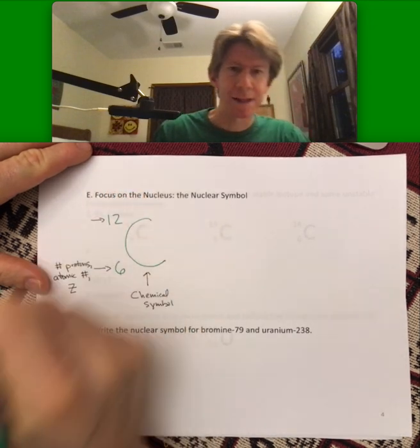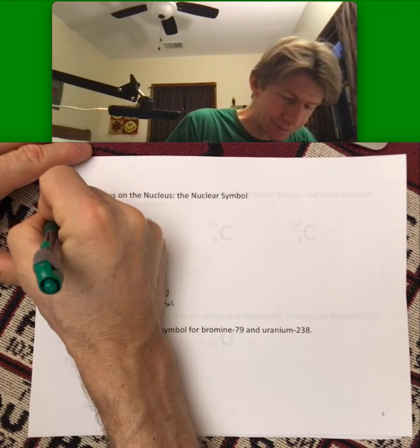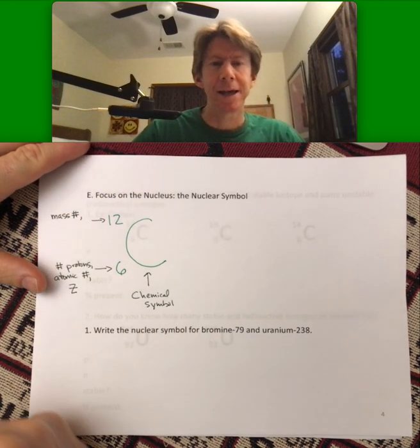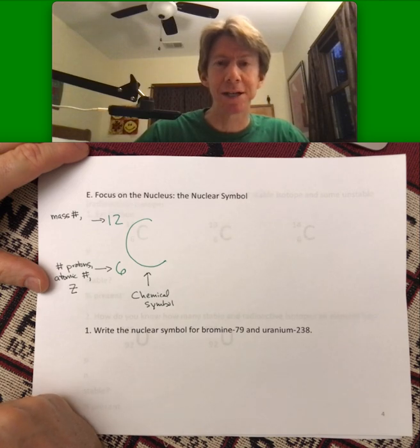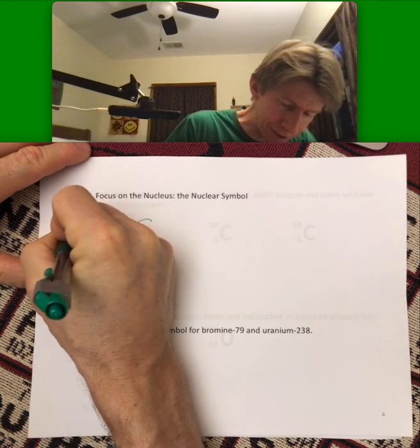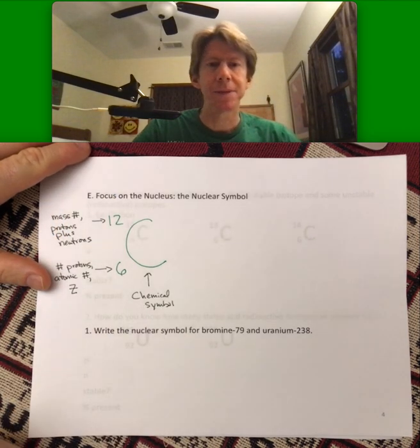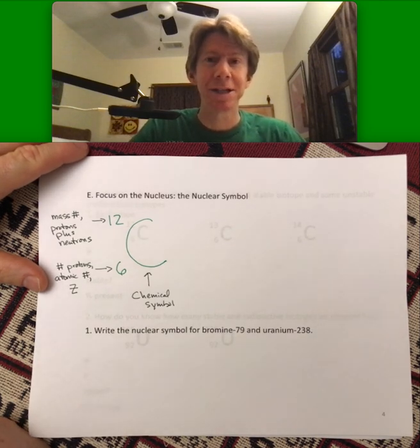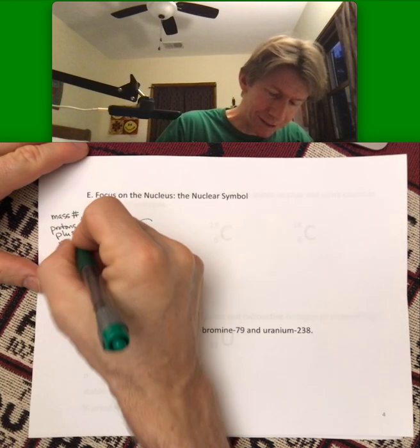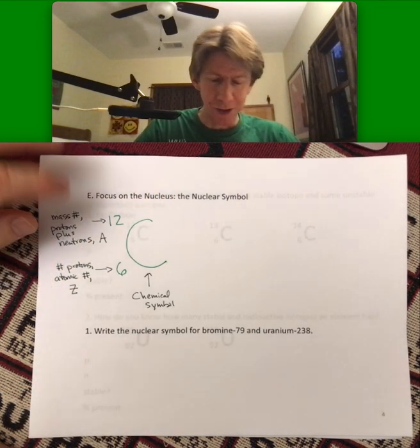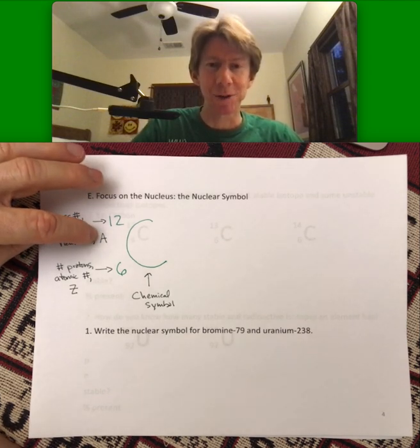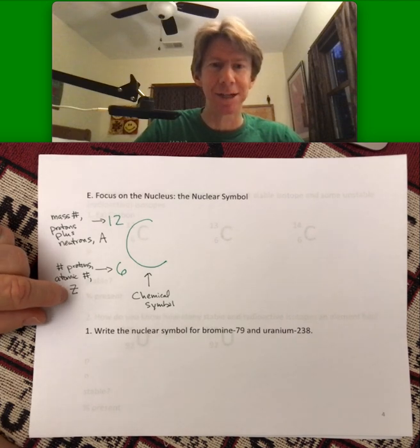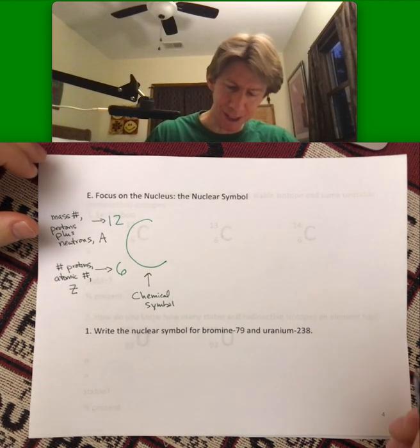And up here is the mass number. And the mass number is the sum of the number of protons plus neutrons. Because the protons plus the neutrons are 99.97% of the mass of the atom, that's where the term mass number comes from. And for reasons that I don't understand, this is A, which is usually the symbol that you'll see for that. Although I have not used A in any of the courses I teach, although I have used Z for the atomic number or the number of protons before.